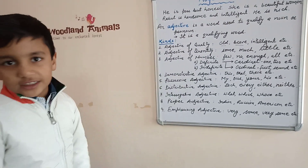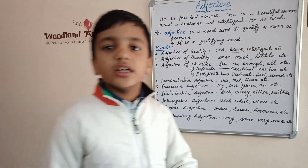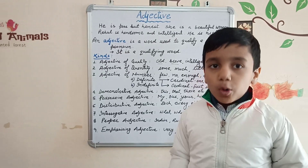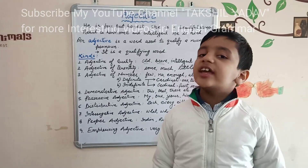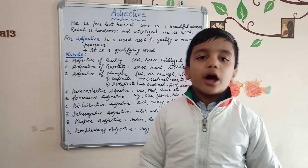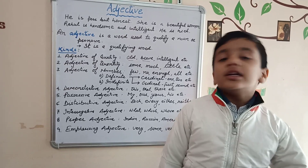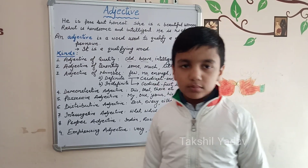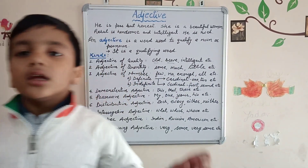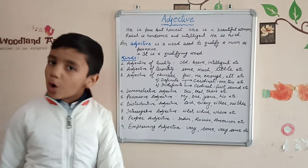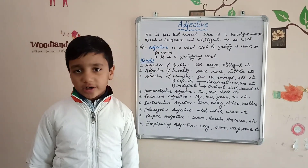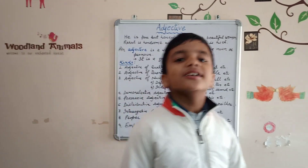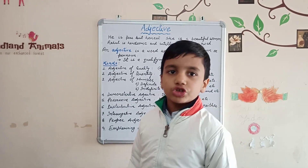Now, fourth, demonstrative adjectives. The adjectives that are used to point out something are known as demonstrative adjectives. The most common demonstrative adjectives are: this, that, these, those, such, etc.